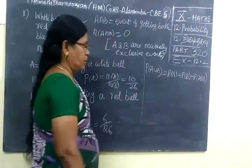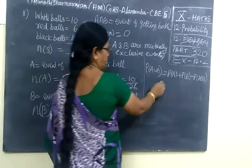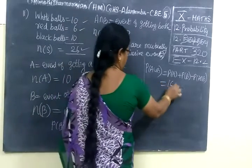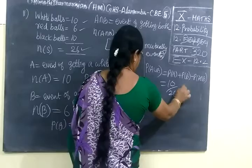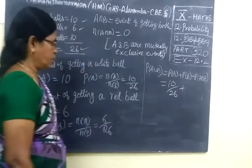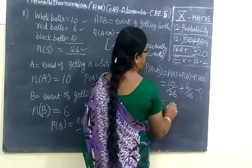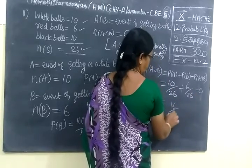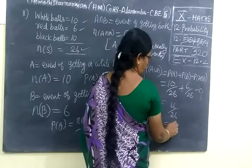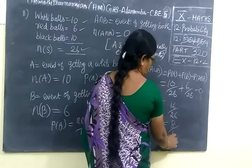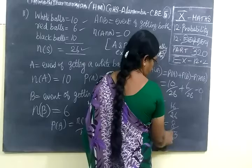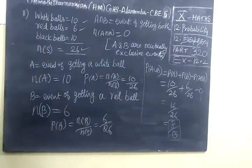Now come to the formula for P(A union B). Since A and B are mutually exclusive, P(A union B) = P(A) + P(B) = 10/26 + 6/26 = 16 by 26. If you simplify, you get 8 by 13. So the answer is 8 by 13.